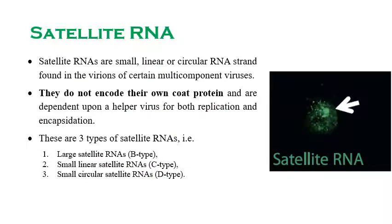Satellite RNA is a small linear or circular RNA strand found in the virions — that is, the completely mature virus particles — of certain multi-component viruses. Complete or mature virus particles are called virions.